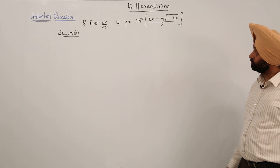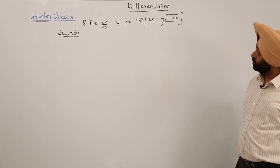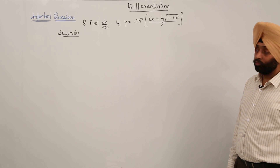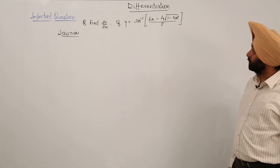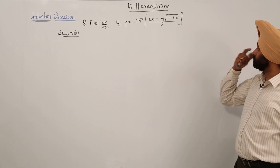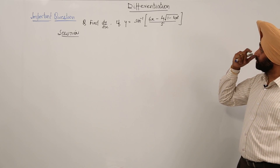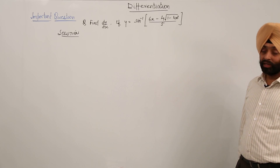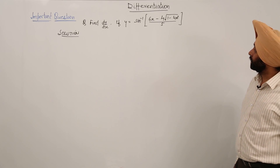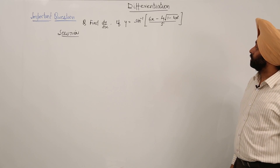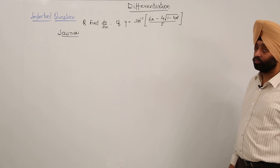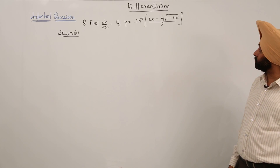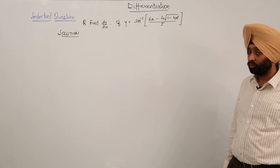Very important question. We have to find dy/dx when y is equal to sin inverse of (6x minus 4 square root of 1 minus 4x squared) upon 5.